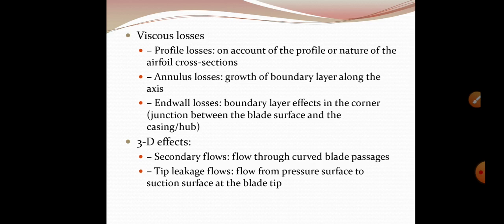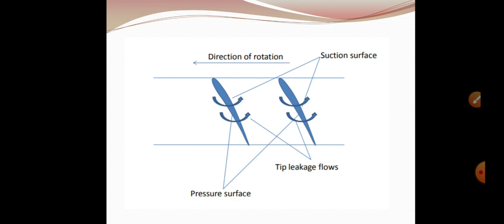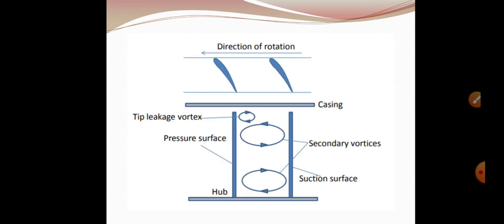3D effects: secondary flow through curved blade passages. Tip leakage flows, flow from pressure surface to suction surface at the blade tip. Here you can see direction of rotation of this blade and suction surfaces, and the tip leakage leaking from bottom to top, and how pressure on the surfaces is varying.